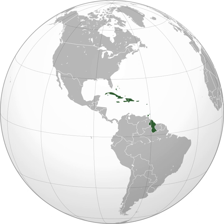Geopolitically, the Caribbean islands are usually regarded as a subregion of North America and are organized into thirty territories including sovereign states, overseas departments, and dependencies. From December 15, 1954, to October 10, 2010, there was a country known as the Netherlands Antilles composed of five states, all of which were Dutch dependencies.